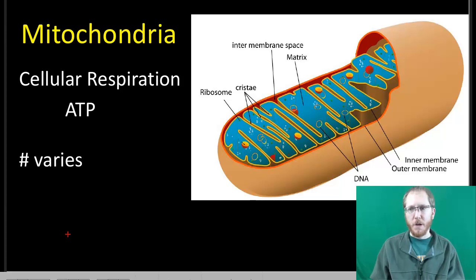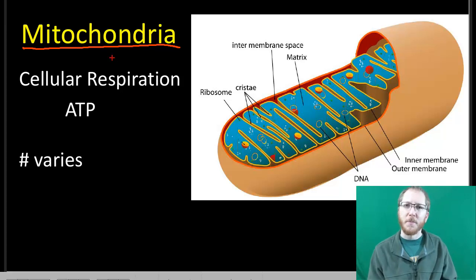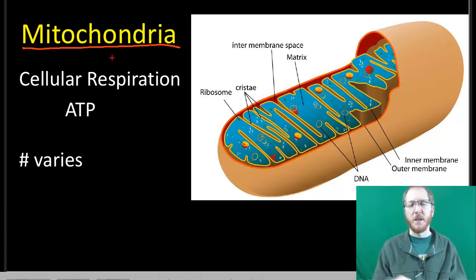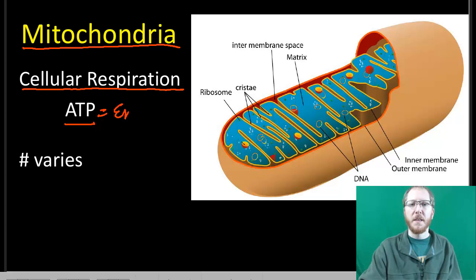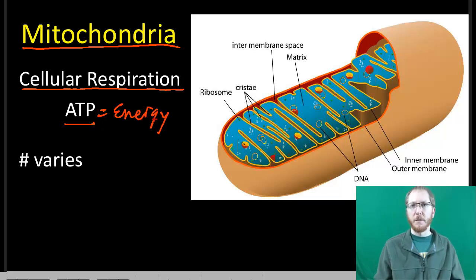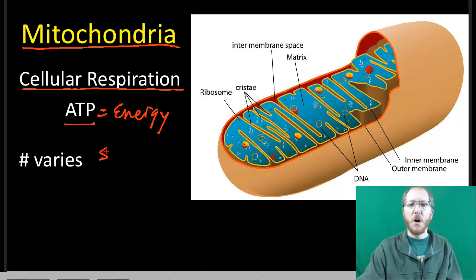As we transition, we get to the mitochondria — commonly referred to as the powerhouse of the cell. What it does is a process called cellular respiration, specifically aerobic respiration — the one that uses oxygen — and it produces ATP. If you remember, ATP is essentially energy as far as our cells are concerned. That's what our cells use for energy, making the mitochondria very important, especially if you're a cell that's doing a lot of work.